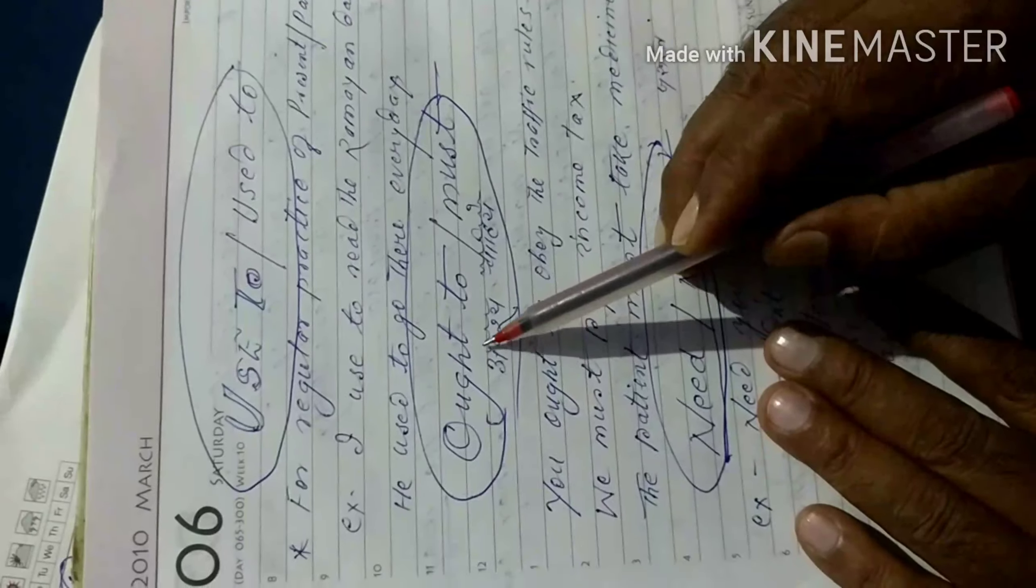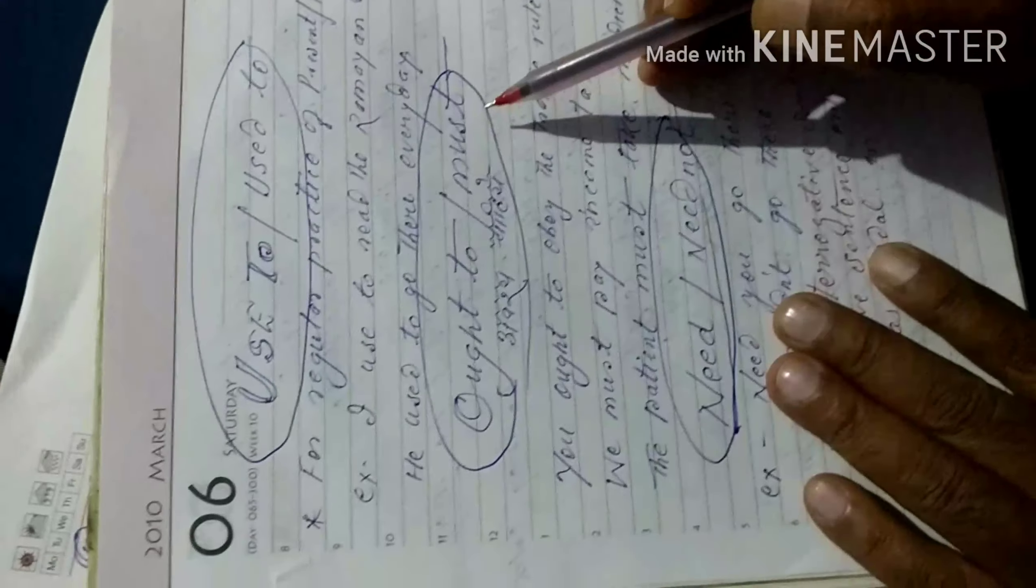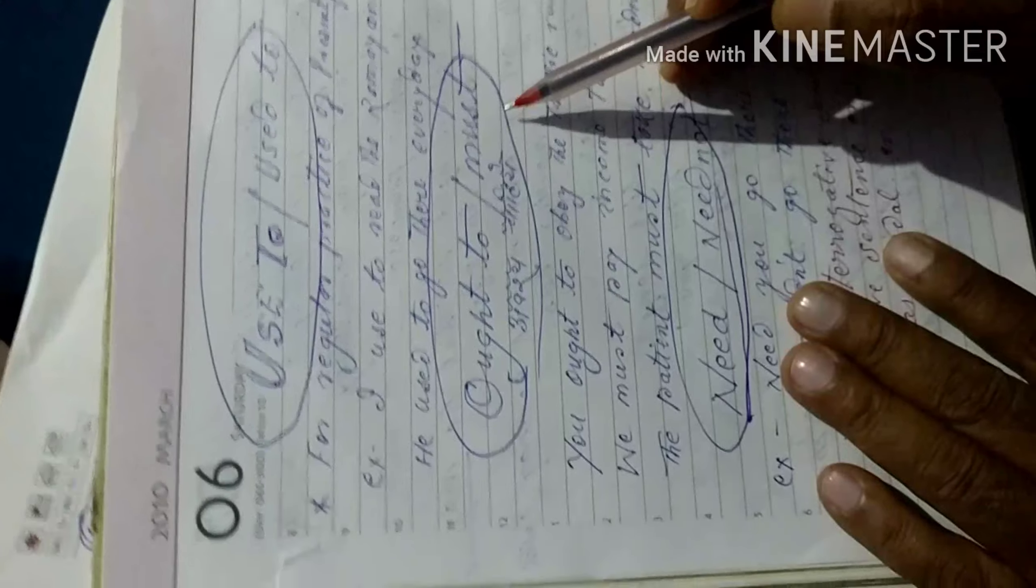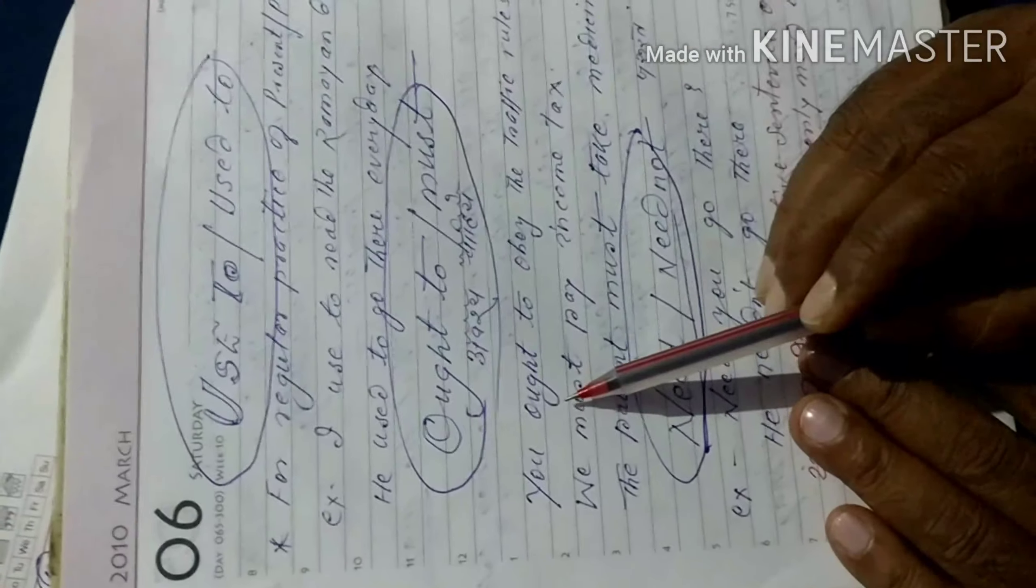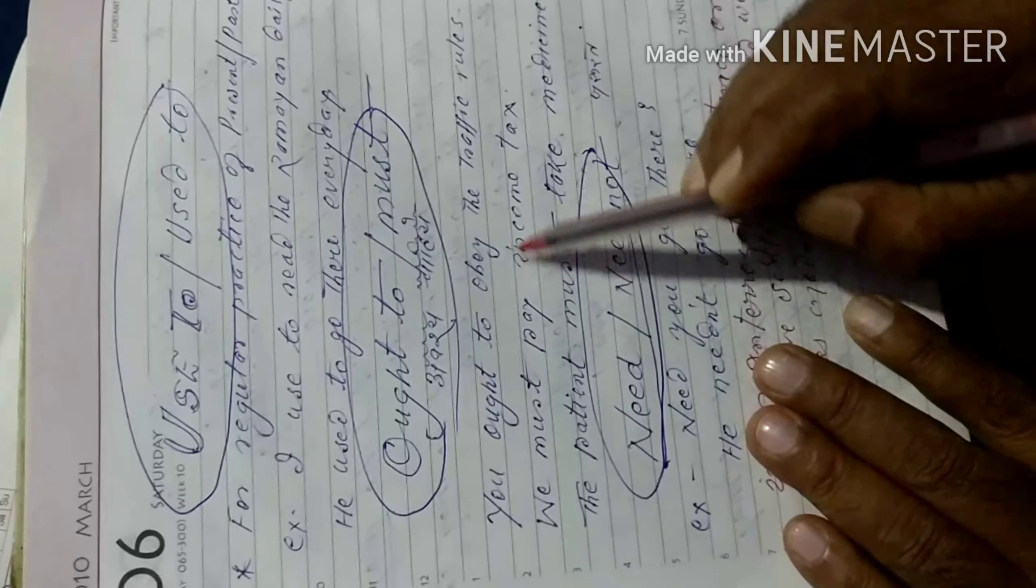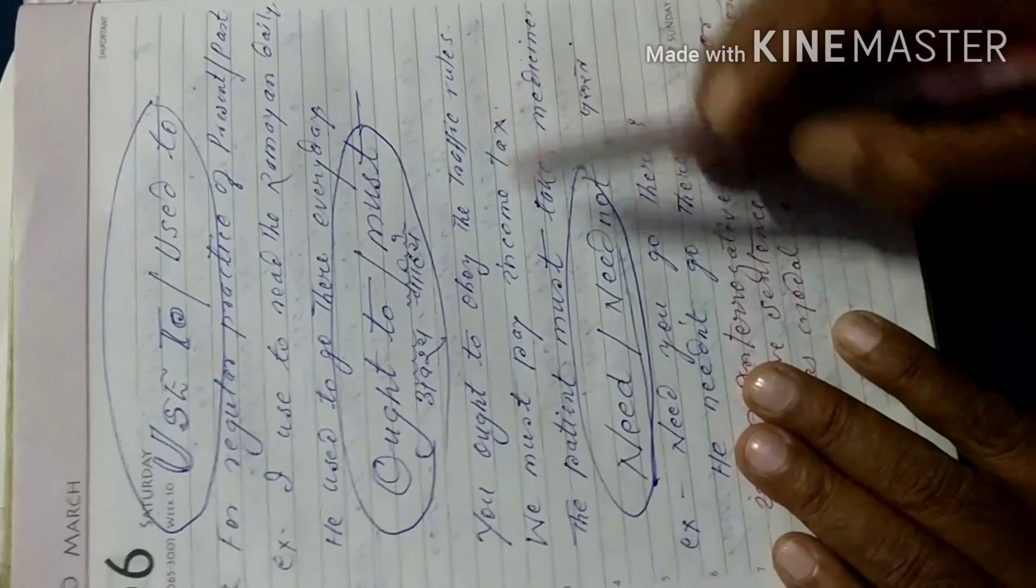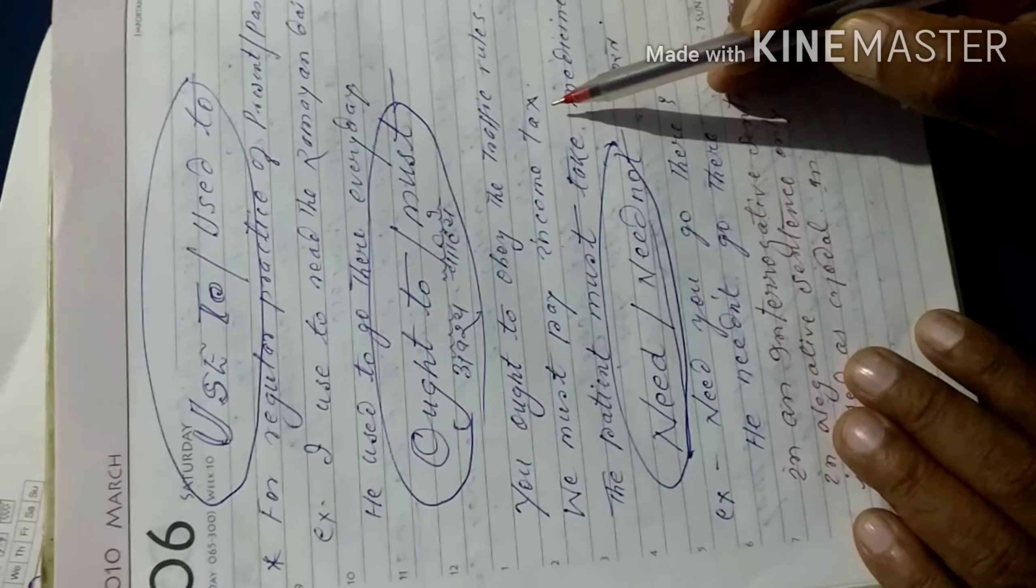Now, next use of model ought to and must. Both are same in use. Its Hindi is Awas Chahiye. It shows compulsion duty. For example, you ought to obey the traffic rule. We must pay income tax.